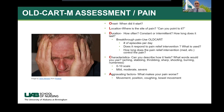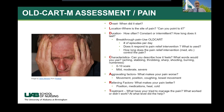C is for characteristics. A is for aggravating factors — what makes the pain worse, such as movement, position change, coughing, or bowel movement. R is for relieving factors — what makes it better, such as a certain position, medications, heat, or cold. T is for treatment — have you tried anything to manage the pain, what has worked in the past? And M is for the meaning of the symptom to the patient — what does pain mean to them? This gets into the psychological and spiritual evaluation.